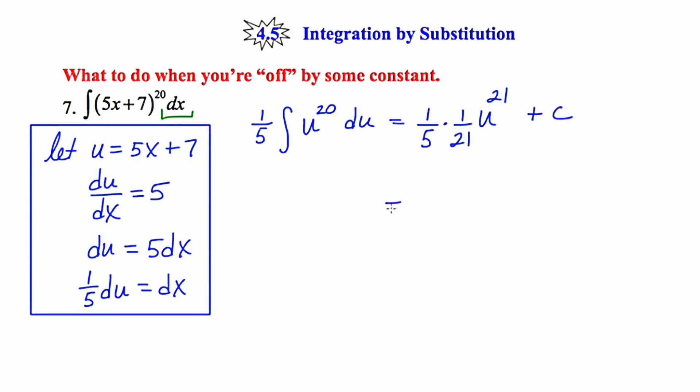Now cleaning this up, we end up getting 1 over 105, u to the 21st plus c. And then we back substitute in for u. And u is 5x plus 7. So here's our final answer.